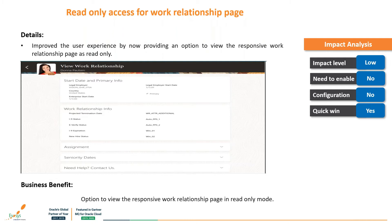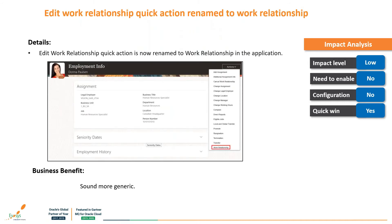We also have a good security feature required by most businesses and legal entities - particularly when they want to view the work relationship page. There is now out-of-the-box read-only access for the work relationship page from the responsive UI. HR administrators and managers can check the work relationship information of an employee during terminations, hires, global temporary transfers, global transfers, and regular transfers.